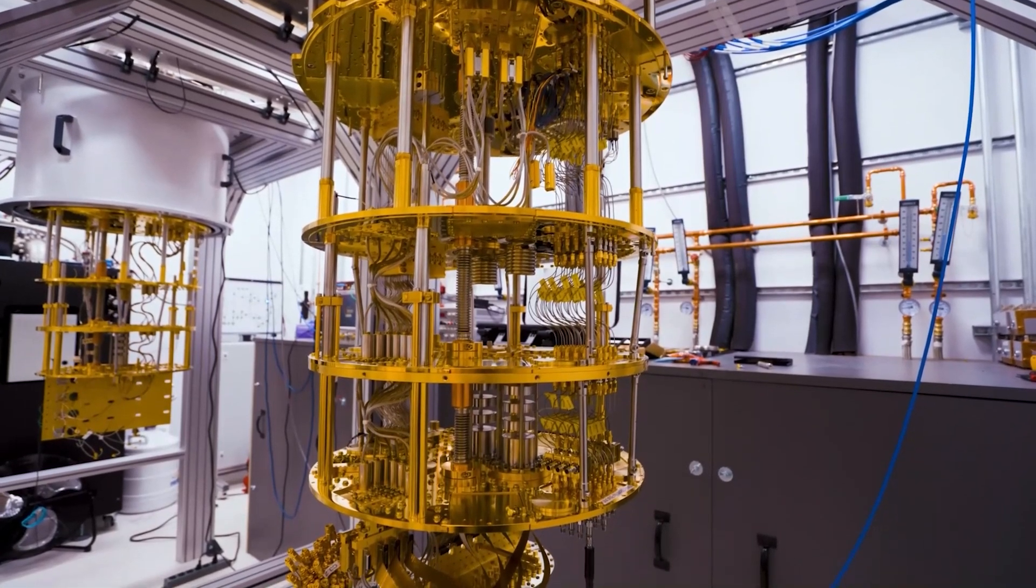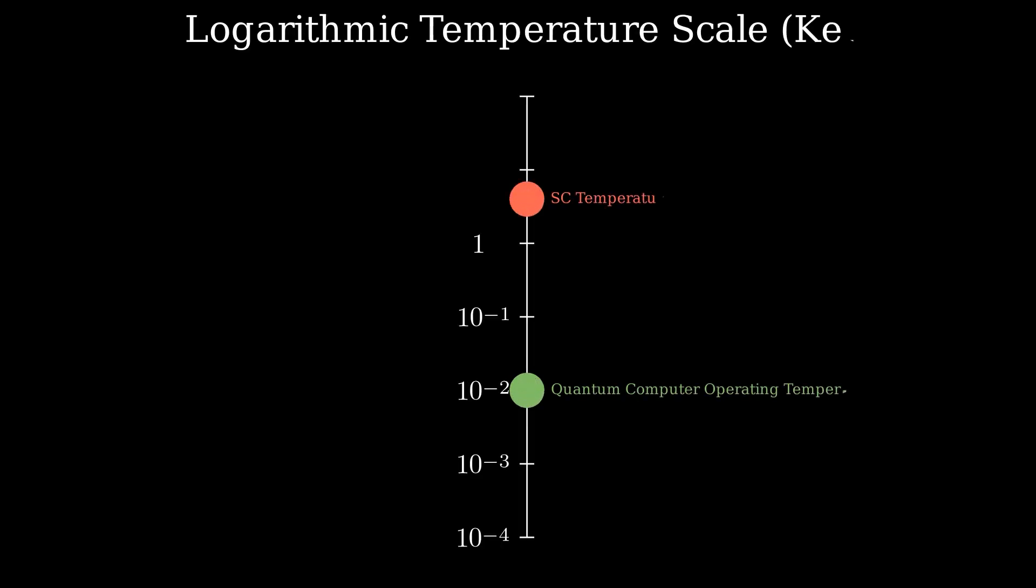For starters, we have a dilution refrigerator. The dilution refrigerator is a cryogenic refrigerator which gets all the way down to a base temperature of 10 mK. This is minus 273.14 Celsius, or negative 459.65 Fahrenheit. This is 100 times colder than the coldest points in deep outer space.